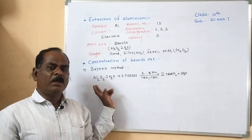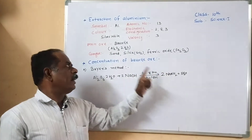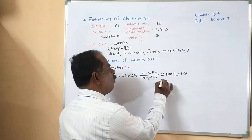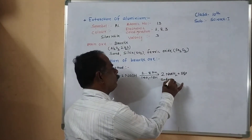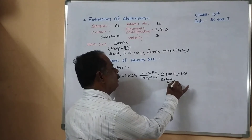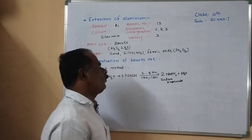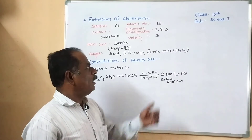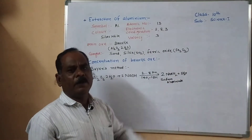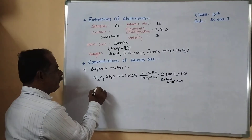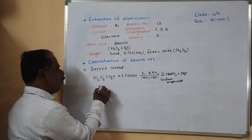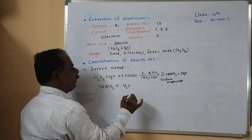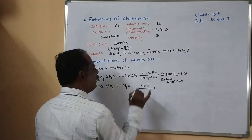In the first step, aluminum reacts with sodium hydroxide to form sodium aluminate, and silica also reacts with sodium hydroxide to form sodium silicate. Sodium aluminate and water-soluble sodium silicate are formed, while insoluble ferric oxide remains in the solution. This solution is filtered to separate the gangue ferric oxide. The filtrate is then diluted with water.